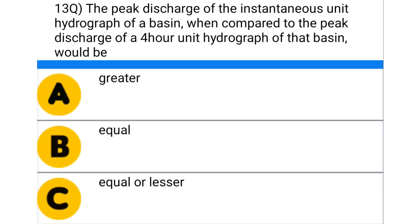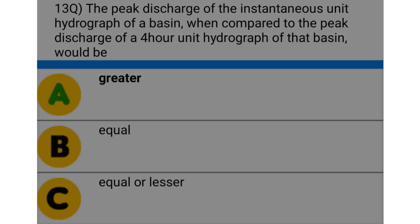Next question: the peak discharge of the instantaneous unit hydrograph of a basin when compared to the peak discharge of a 4-hour unit hydrograph of the basin would be — option A: greater, option B: equal, option C: equal or lesser, option D: lesser. The correct answer is option A: greater.